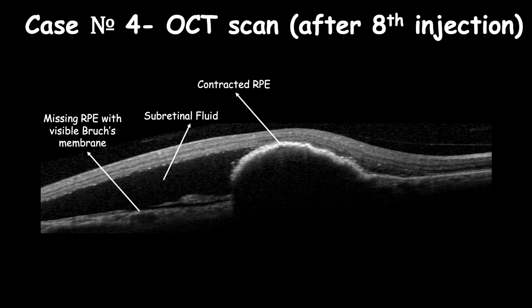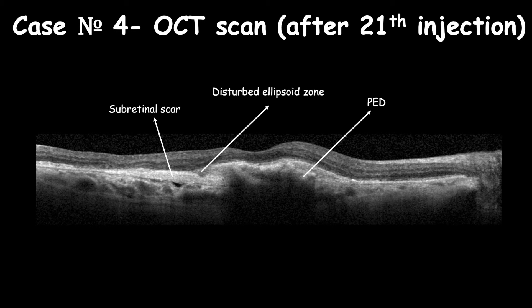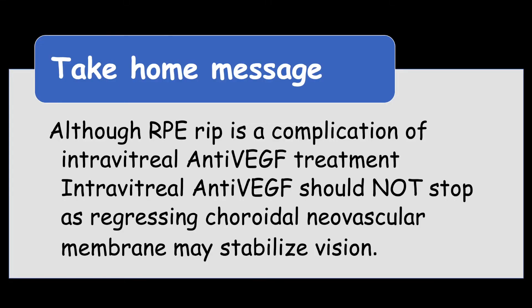Diagnosis is wet AMD with serous pigment epithelial detachment complicated by RPE rip after intravitreal anti-VEGF injection. The patient was managed with continued intravitreal ranibizumab monthly until the 21st injection, where subretinal fluid resolved and PED reduced significantly in size, with subretinal scar formation and improved vision up to 20/35. A take-home message: although RPE rip is a complication of intravitreal anti-VEGF treatment, therapy should not stop, as regressing choroidal neovascular membrane may stabilize vision.